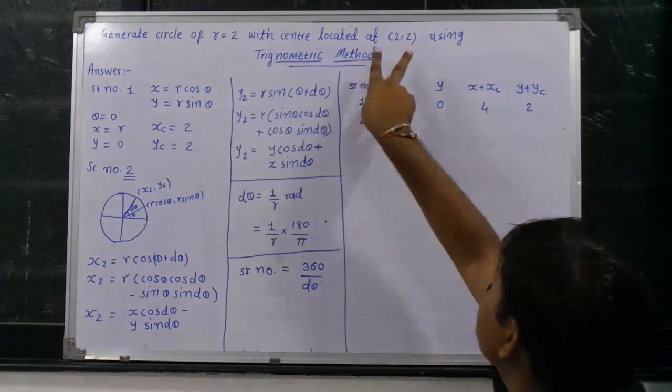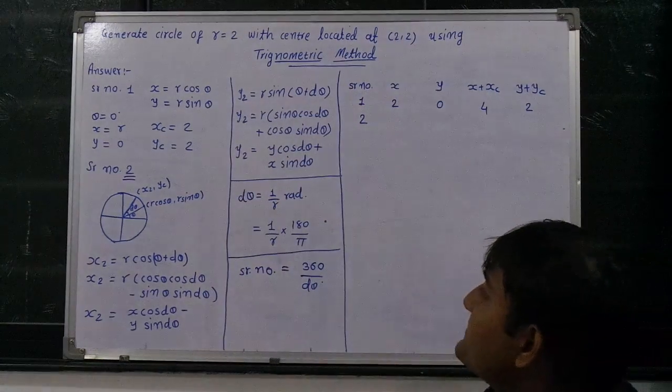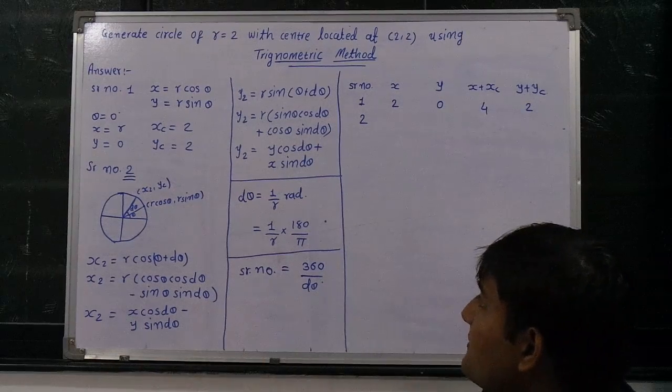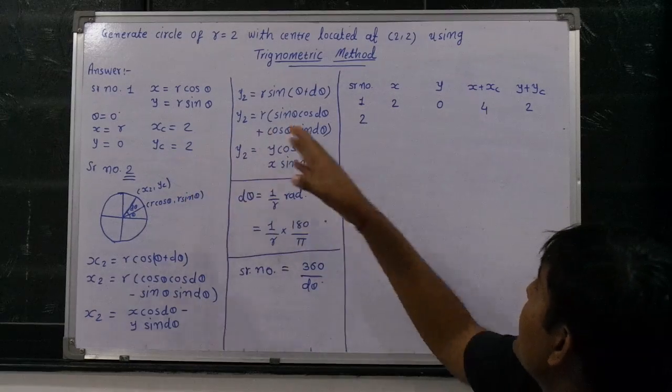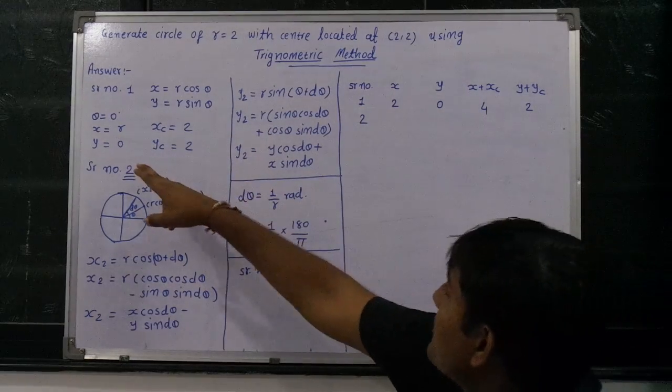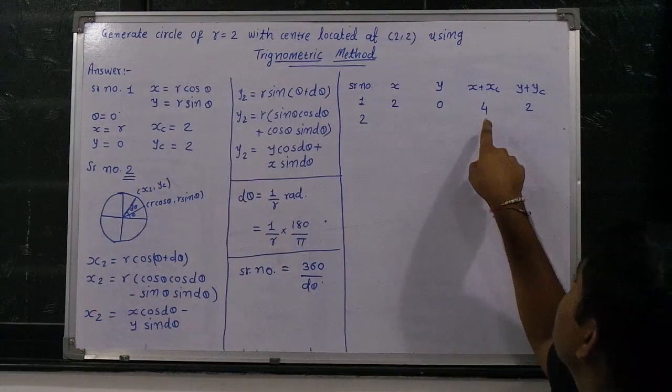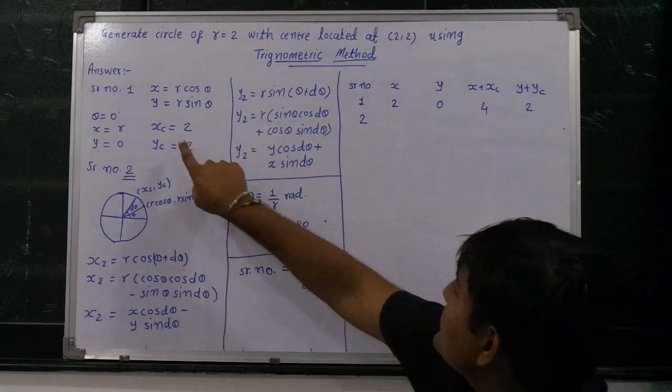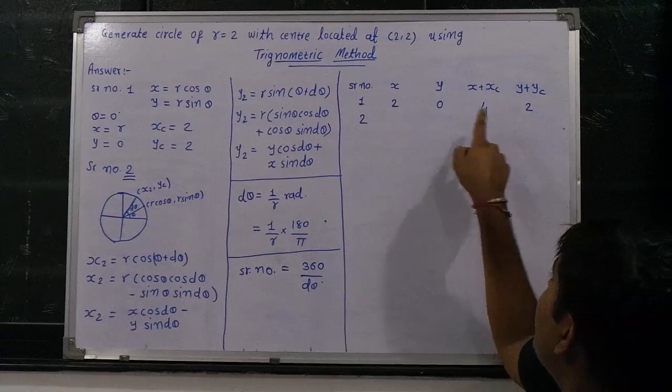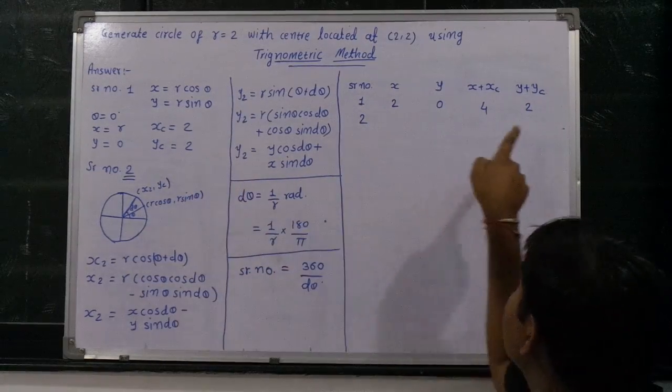Xc and yc are the center shifted from the origin. So now serial number 1: x equals 2 from theta equals 0, y equals 0. And x plus xc is equal to 2 plus 2 equals 4, and 0 plus 2 is equal to 2.